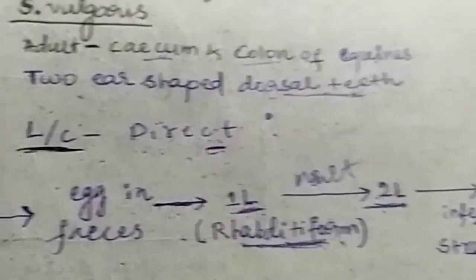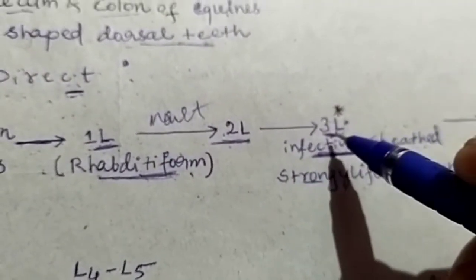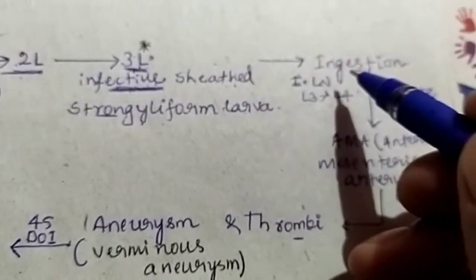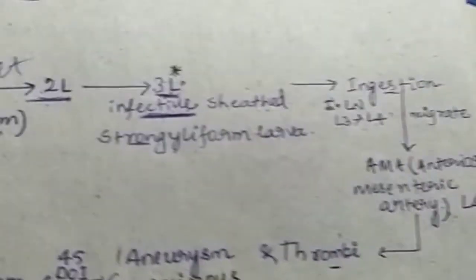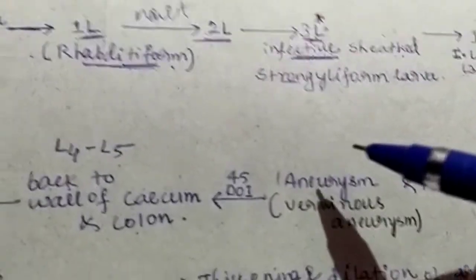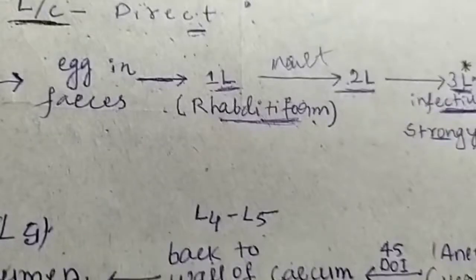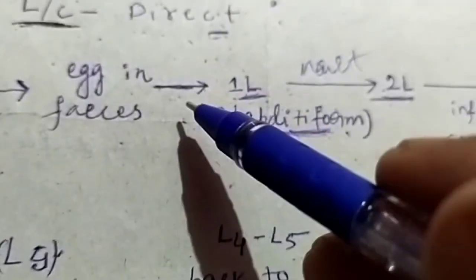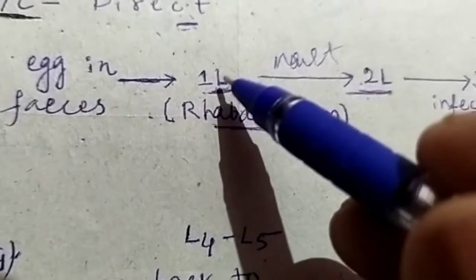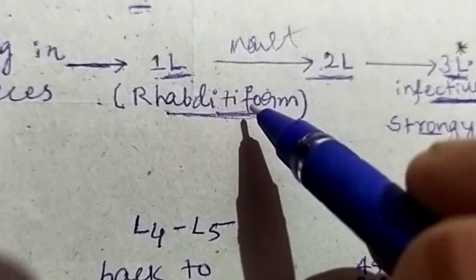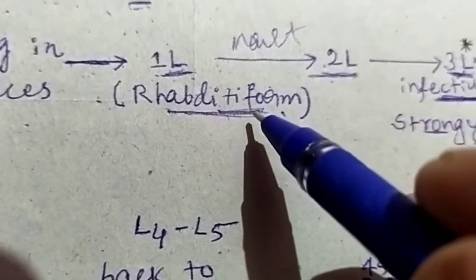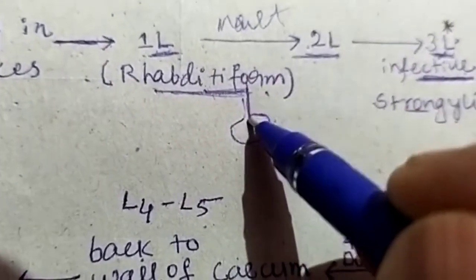The infective stage larvae enter the host by ingestion, mature to produce eggs, and those eggs are voided in the feces. The eggs hatch in the environment to liberate L1 larvae. The L1 larvae is a rhabditiform, which means the esophagus bears a posterior bulb-like structure.